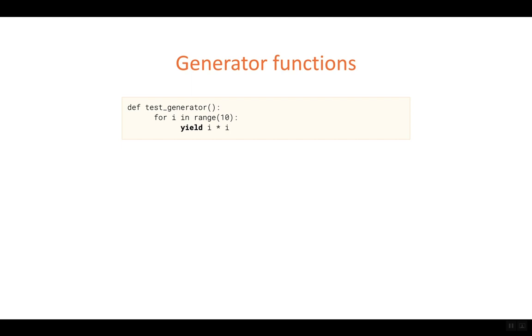So let's see in practice how that works. We have a simple function, a test generator, and we want to produce 10 squares of the numbers from zero to nine. So for each number in this range, we are yielding the value I times I, so I squared.